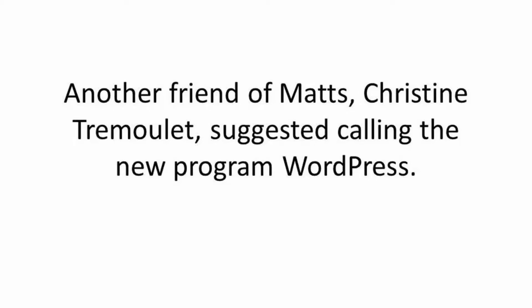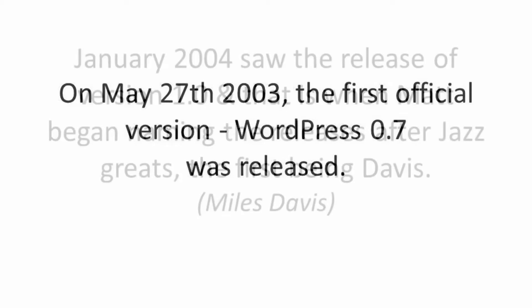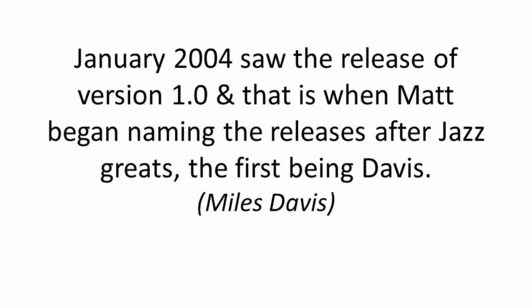Well, it sounds like the name stuck. On May 27th of 2003 the first official version, that's WordPress 0.7, was released. January 2004 saw the release of version 1.0, and that's when Matt began naming the releases after jazz greats, the first being Davis.